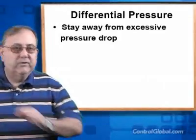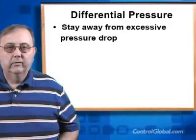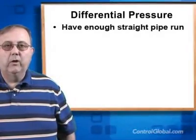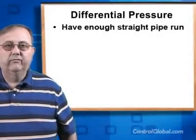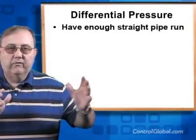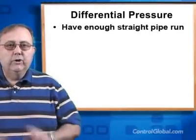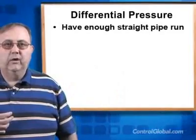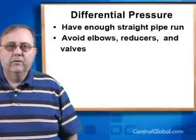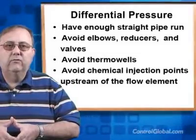Make sure that the pressure drop is not excessive at maximum flow rates to keep abrasion down. Very importantly, make sure you have enough straight run upstream and downstream of the flow element to ensure accurate flow readings. The old rule of thumb of 10 diameters upstream and 5 diameters downstream doesn't always work. In the case of spiraling flows, for example, you need 100 diameters upstream if you can get them. Elbows, reducers, and valves increase the amount of run you need. Thermo wells and chemical injection points can also seriously affect the accuracy of the measurement.